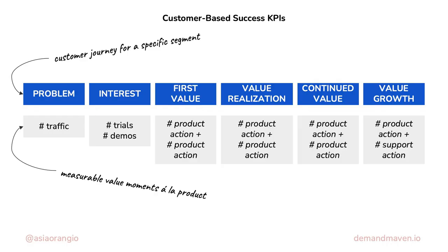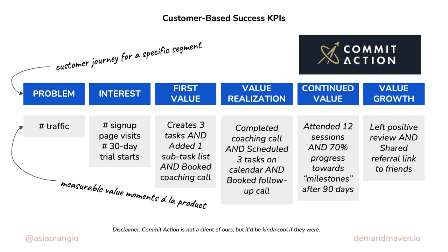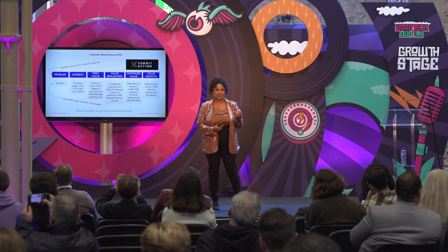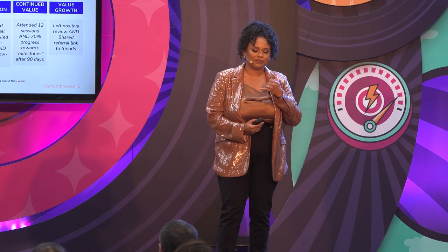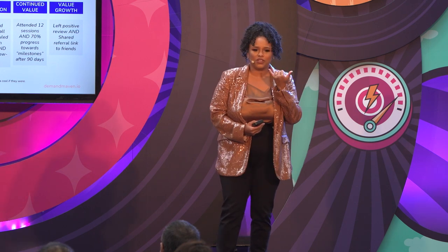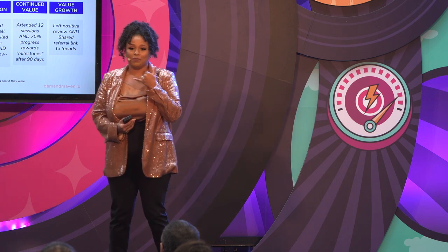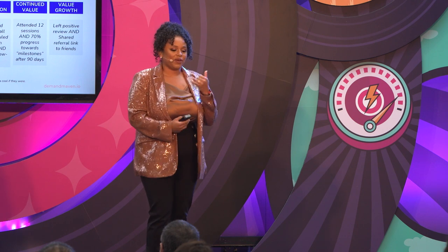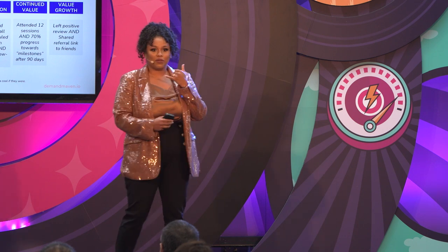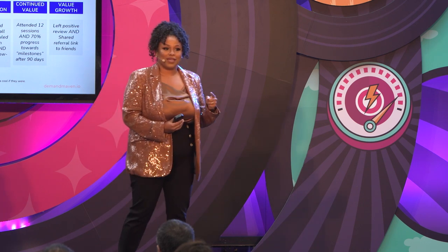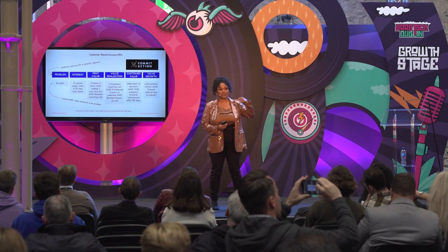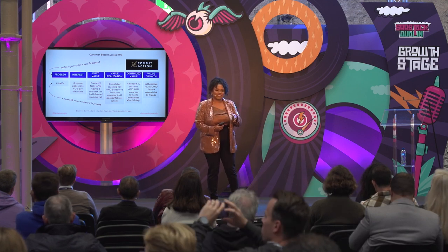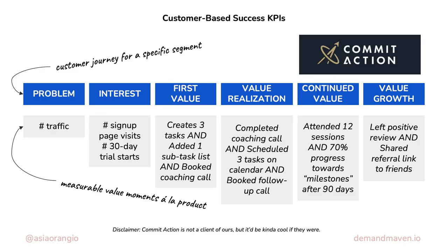Let me give an example. I recently signed up for a tool called Commit Action — a software-enabled accountability service. Every week you hop on a call with an accountability coach who asks what you need to do, schedules it on your calendar, checks in every few days, and reports back each week. I've been two to three weeks in and I'm already mapping out in my head what their customer success KPIs probably look like — based purely on my own experience as a customer.